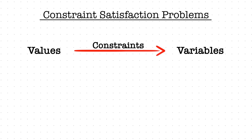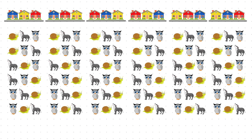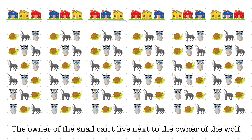Put simply, these problems involve assigning values to variables while making sure that these assignments meet specific restrictions or constraints. Take Einstein's Riddle for example. The variables might be the colors of houses or the owners' pets. And the values assigned to these variables could be colors like blue, yellow, or red, and pets like a snail, wolf, or an owl. With this setup, we can make many value assignments that are all valid solutions. But this is where constraints come into play. Let's say there is a constraint that the owner of the snail can't live next to the owner of the wolf — in that case, many of these potential assignments become invalid. And as we add more constraints, finding the correct solution becomes increasingly challenging.